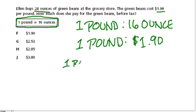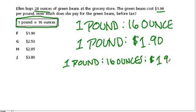One pound is the same thing as 16 ounces. And we said that every one pound costs us $1.90. That just means that every 16 ounces also costs us $1.90.